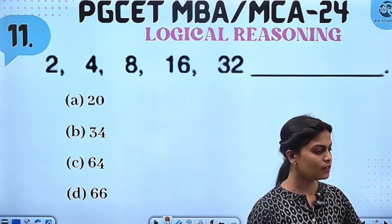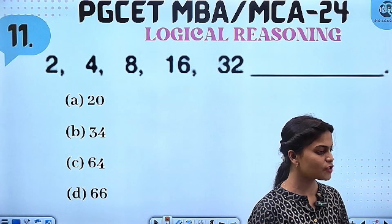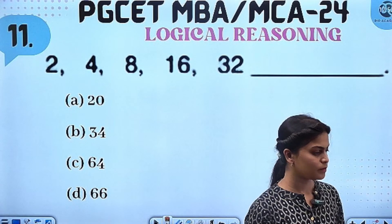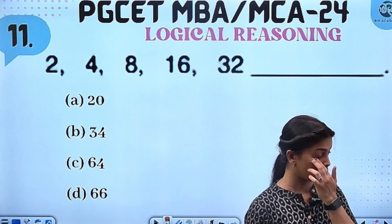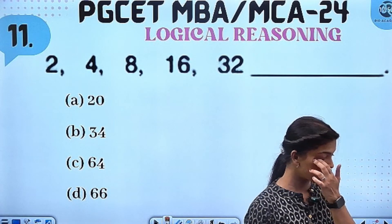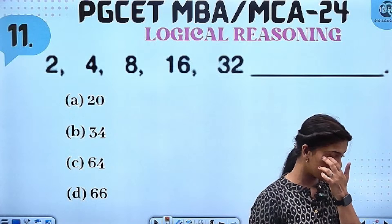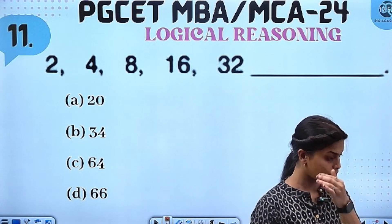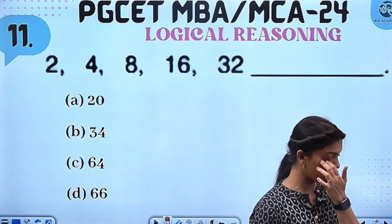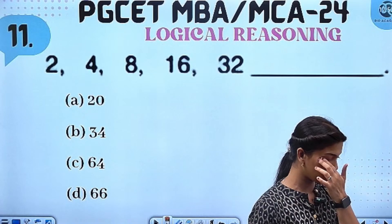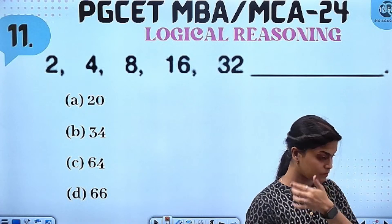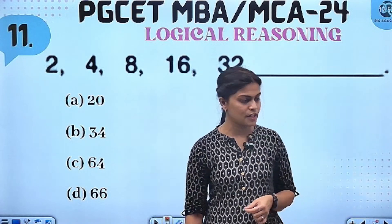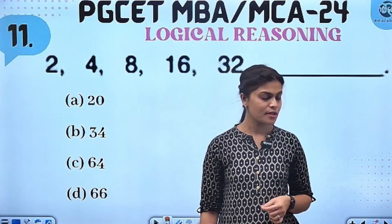Clear? Yes. So, next question is Nidani. Okay, option C. 64. 64 — yes, yes, yes. Hashita, very good. Hashita, Kailash.